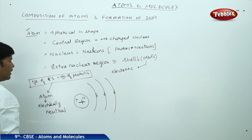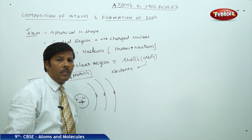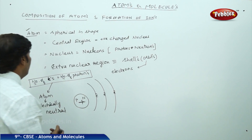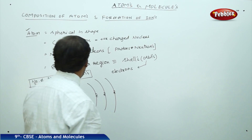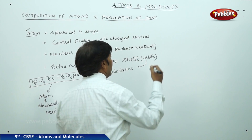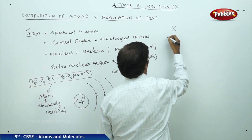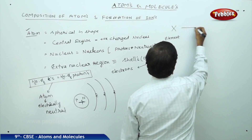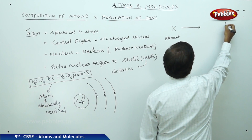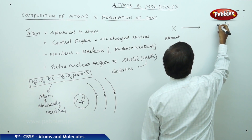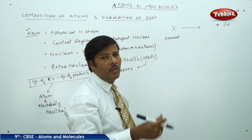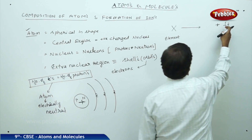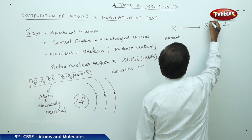But when the atom is not electrically neutral, the number of electrons is not equal to the number of protons. If an element X loses one electron and gives it away, then element X acquires one unit of positive charge on the product side.